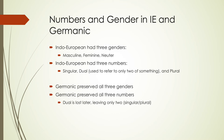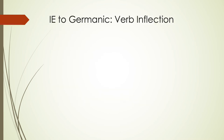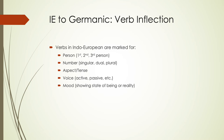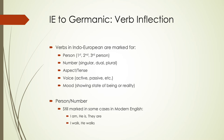Verbs in Indo-European were marked for person, number, aspect or tense, voice, and mood. Regarding person and number: first, second, and third person were marked. We still mark some of these in modern English — 'I am, he is, they are' — and in the present tense we still have a distinction for third person singular: 'I walk' but 'he walks.' But there would have been a more complicated system in Indo-European and into Germanic, similar to what you'd find in Spanish verb conjugations.